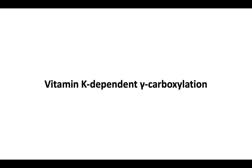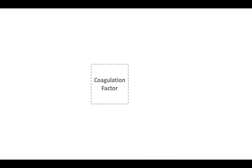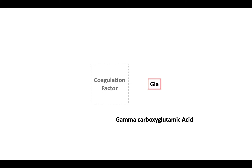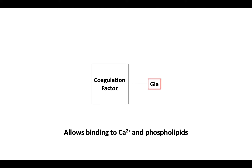Let's first discuss vitamin K-dependent gamma-carboxylation. A vitamin K-dependent coagulation factor starts out in an inactive state with a glutamic acid residue. Through an enzymatic reaction, the glutamic acid residue is converted to Gla, or gamma-carboxyglutamic acid. This conversion activates a coagulation factor, allowing its binding to calcium and phospholipids in support of coagulation.